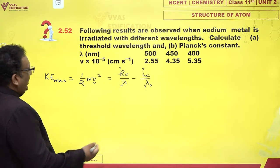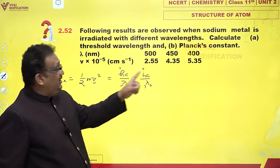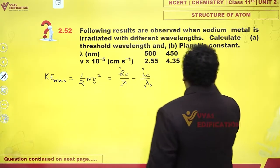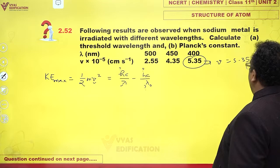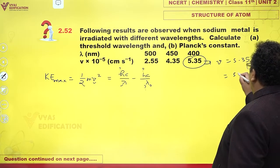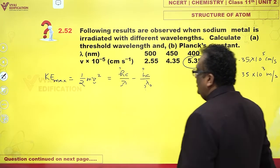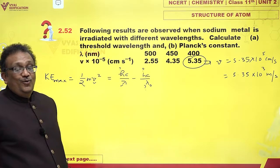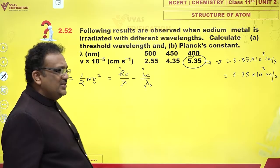Just any of these two data you can substitute, solve, and get the answer. Please note nanometers, this is the wavelength. When you are given V into 10^-5, that means V is equal to 5.35 into 10^5 centimeters per second or 5.35 into 10^3 meters per second. This is how you should calculate the velocity. I have the velocity, I have lambdas.